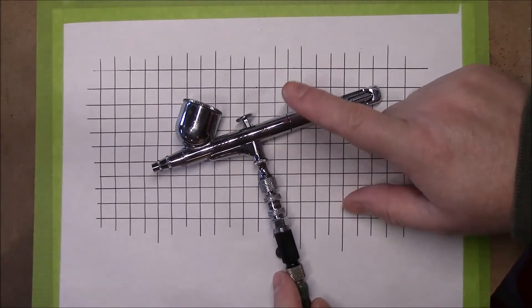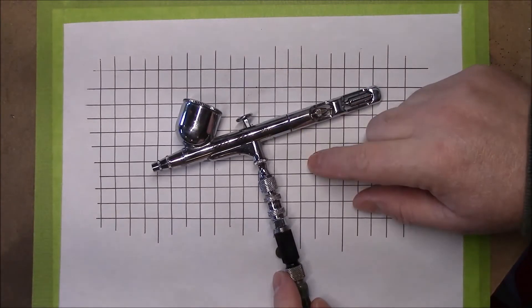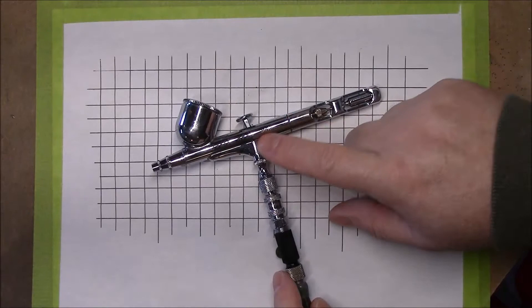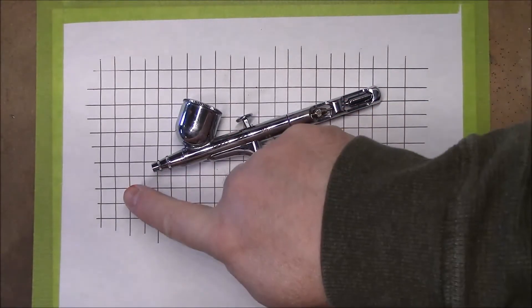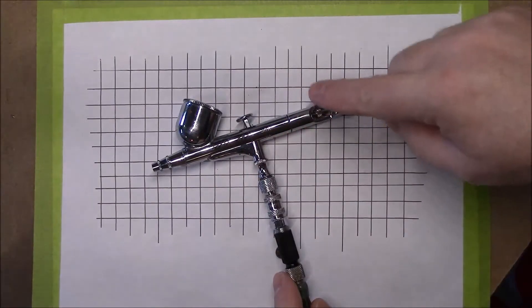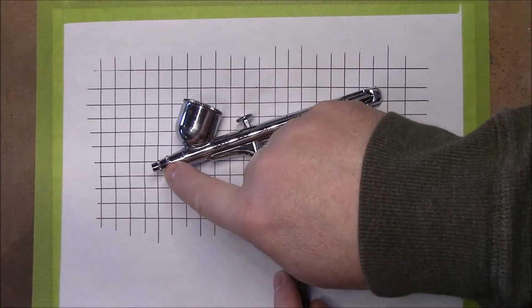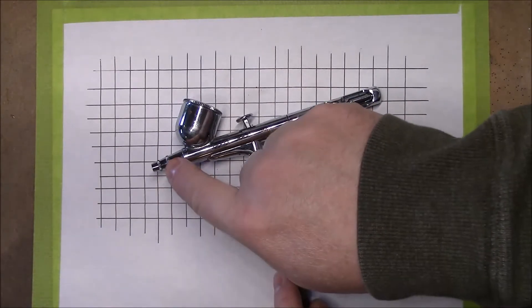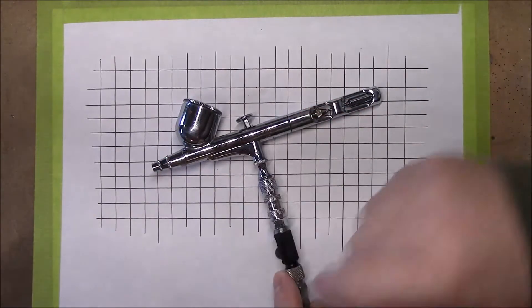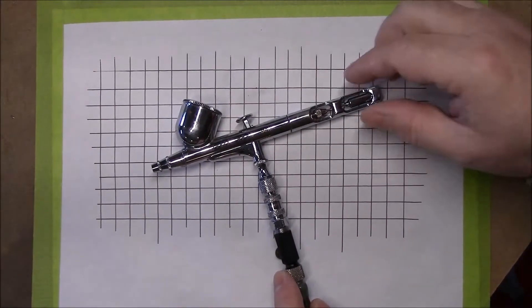An airbrush is a precision instrument, believe it or not. And what's precise about it is the way the air travels through the airbrush, the way the paint travels through the airbrush, and the magic that happens right here at the nose where it mixes paint and air to spray onto any surface for any reason, not just for miniatures.